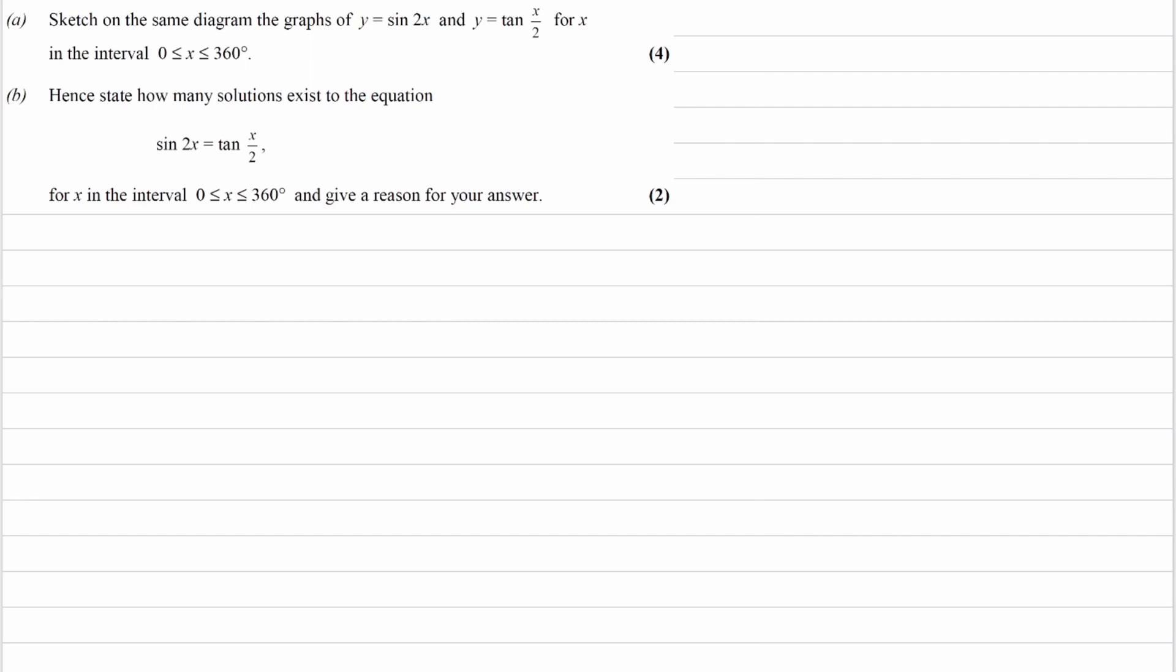So let's first think about what transformations have occurred to get sine 2x and tan x over 2. I'm going to say that f of x is equal to sine x. If we then think of f of 2x, that will then give us sine 2x. And how that works is whatever you replace x with in these brackets is what x gets replaced with in our function. So x goes to 2x.